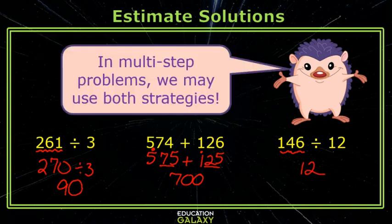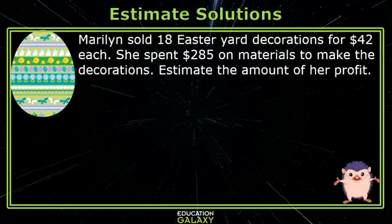In multi-step problems, we may actually use both strategies. Let's get started. Marilyn sold 18 Easter yard decorations for $42 each. She spent $285 on materials to make the decorations. Estimate the amount of her profit.